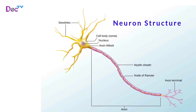Neurons are nervous system cells that can conduct electrical signals and pass information rapidly throughout the body. A typical neuron consists of a cell body, also called the soma, that has many dendrites and one axon. Signals pass from the dendrites through the cell body and down the axon to the axon terminals. When a myelin sheath surrounds the axon, it provides insulation that increases conduction speed. Not all axons are myelinated. When the signal reaches the axon terminal, it passes to the dendrites of the next neuron or the target cell.